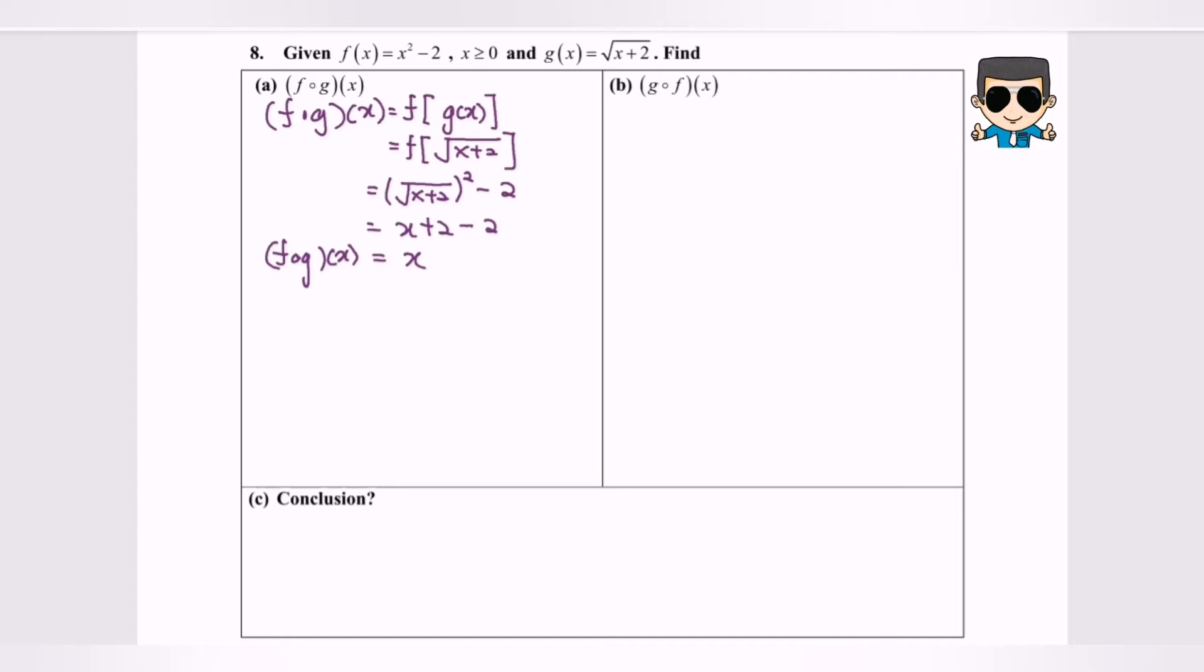Next I'm going to focus on (b). The question asks us to find g composed with f. So g composed with f is equal to g bracket f(x). Now I'm going to substitute the function f(x), so we have g of x squared minus 2.